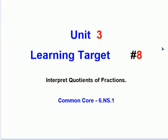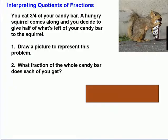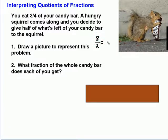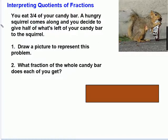Unit 3, learning target number 8: interpret quotients of fractions. What does it mean to interpret the quotient of a fraction? Well, remember that a quotient is simply the answer to a division problem. The division problem of 8 divided by 2 — the answer to that is 4. That is our quotient. That is the number of times 2 goes into 8. Now, to interpret something just means to make sense of it, or to understand it, or to explain it.